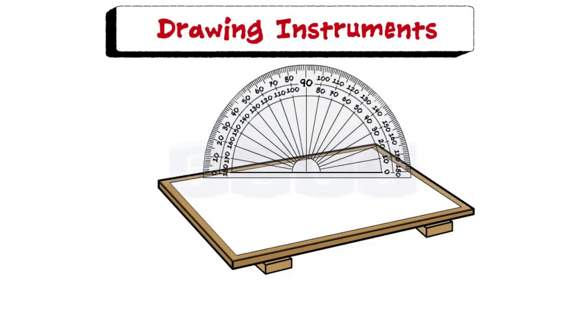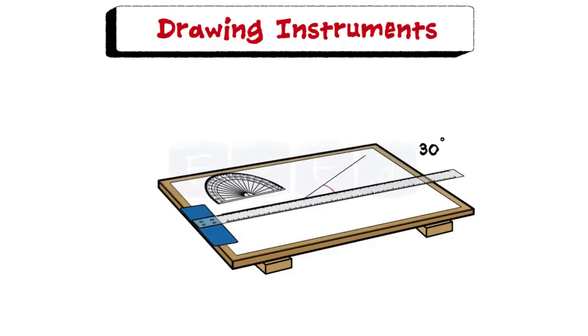Protractor is flat and semi-circular in shape. Its circumferential edge is graduated to 1 degree divisions and is numbered at every 10 degree interval and is readable from both the ends. The protractor is used to draw or measure angles.